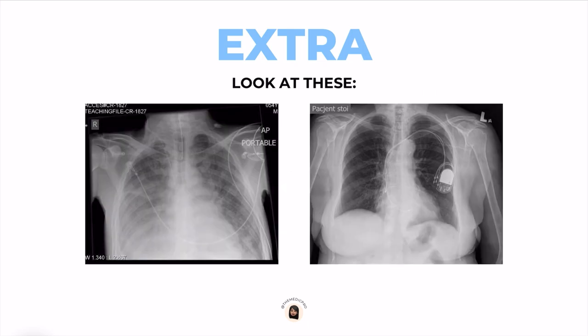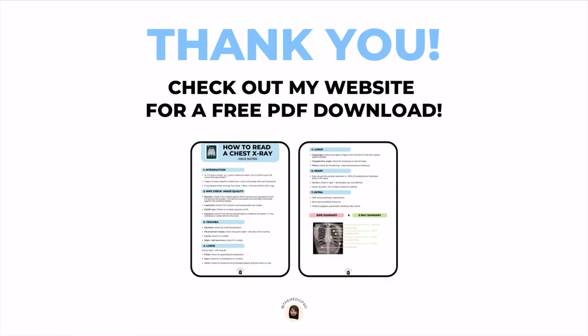Here's what that looks like on an x-ray. On the x-ray on the left, you can see an endotracheal tube. And on the x-ray on the right, you can clearly see the ECG leads. Now that's it — you've successfully analyzed and interpreted an x-ray to ace that OSCE station. Well done.